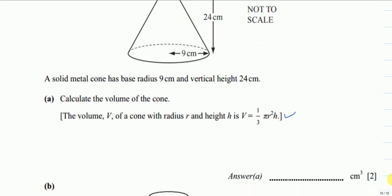Part a is very simple. Volume equals 1/3 πr²h. The radius is 9 cm squared, and the height is 24 cm. This gives you 2035.75 and so on.